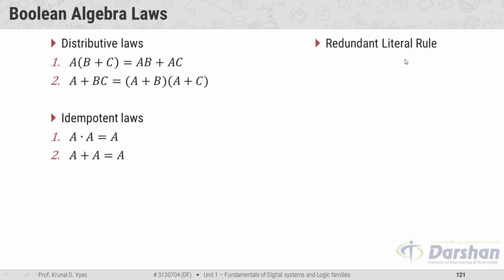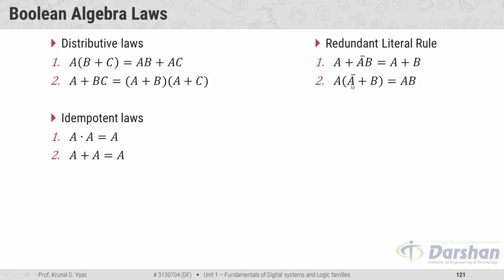The redundant literal rule: the first form is A + A-bar·B equals A + B. Applying the second distributive law to the LHS gives (A + A-bar) AND (A + B); since A + A-bar equals 1, the final answer is A + B. The second rule is A·(A-bar + B): applying the first distributive law gives A·A-bar + A·B; since A·A-bar equals 0, the final answer is A·B.